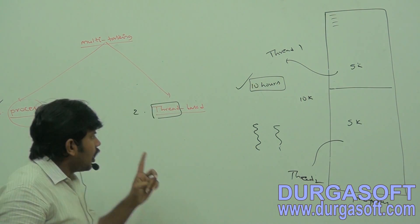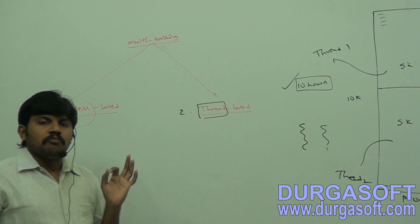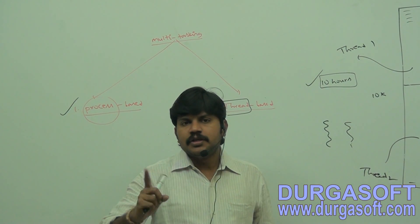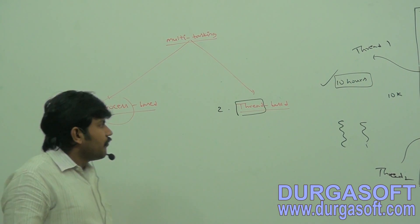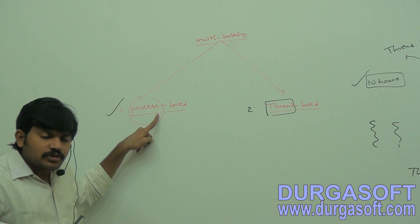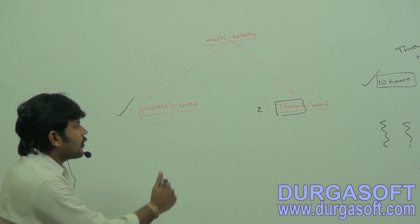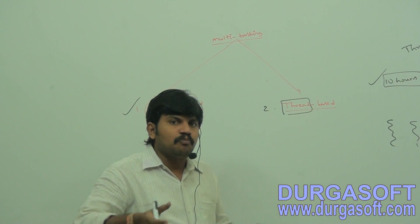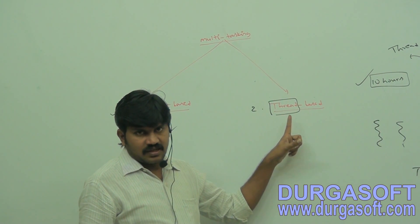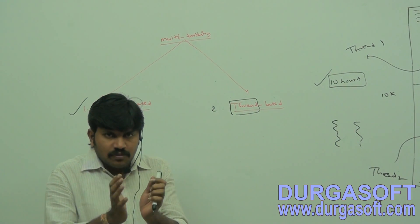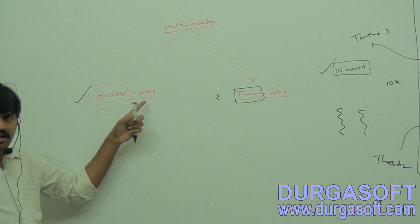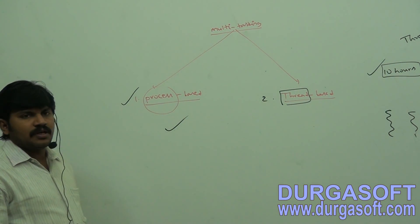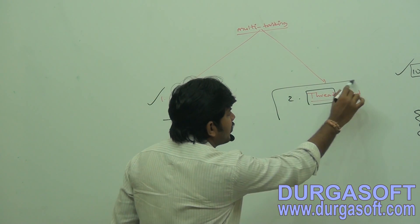So, what is multitasking? Executing several tasks simultaneously. How many types? Process-based and thread-based. Thread-based multitasking is best suitable at the programmatic level. The difference: in process-based multitasking, each task is a separate independent process or application. In thread-based, each task is a separate independent part of the same program — one program, multiple independent parts.